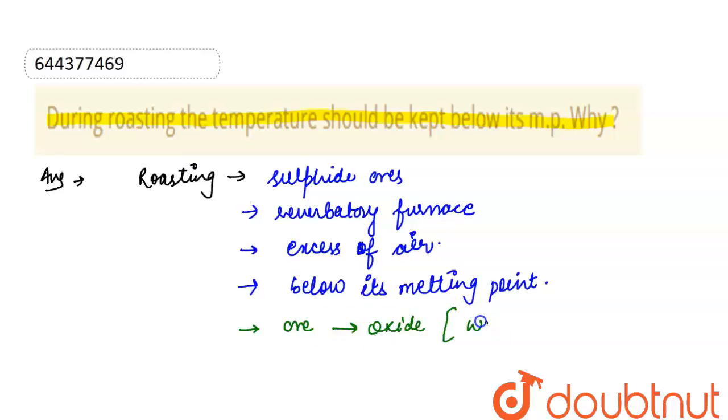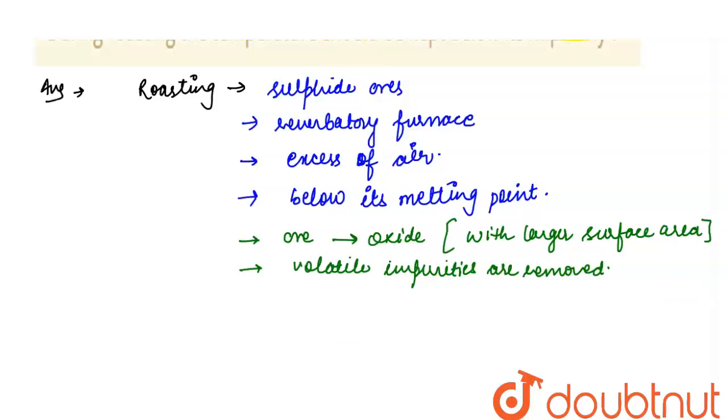The ore forms oxide with larger surface area, and volatile impurities are removed. Let's take an example: Suppose zinc sulfide is heated in excess of air.